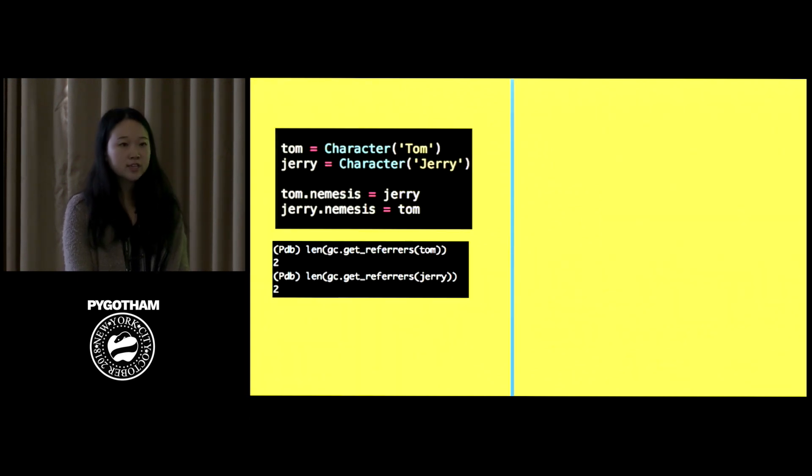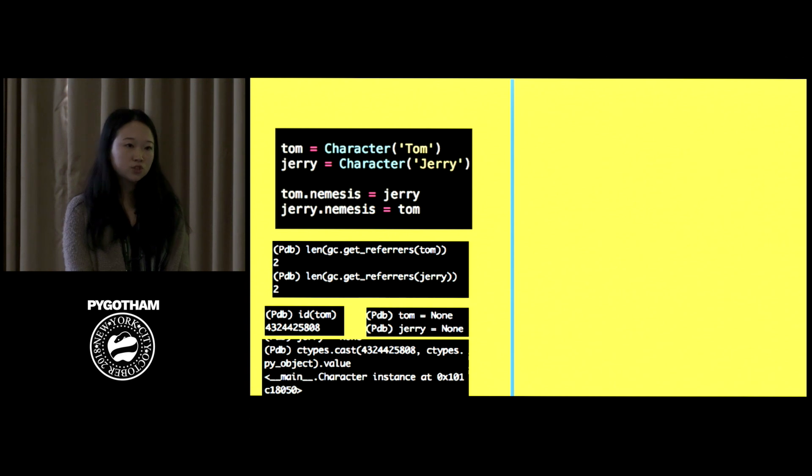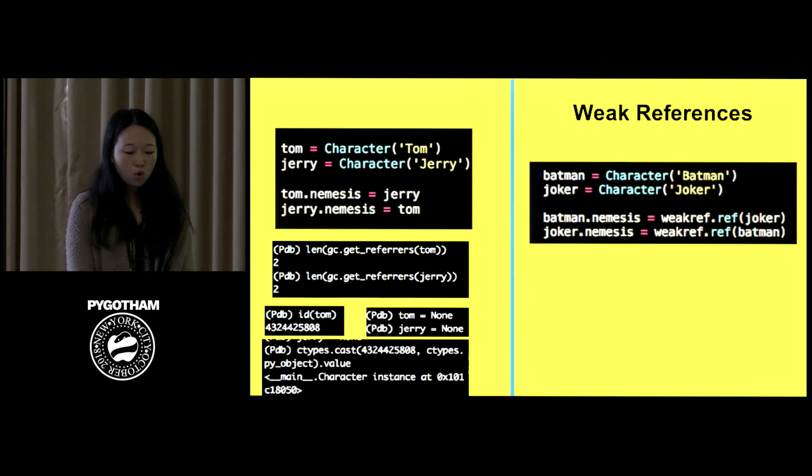And if you want to check this in your program, you could by using the get_referrers method in the GC module, which is the garbage collection module. So you can see before I removed anything, there are two references to both Tom and Jerry. If I want to check does something live in the memory later on, before you remove them, you should get the memory locations. I'm going to just get the ID for Tom for this example. And if I use the ctypes.cast with the memory location as the first argument and ctypes.py_object as my second argument, you can see that I still have a character instance even though I assigned Tom to none.